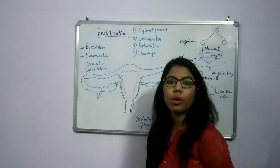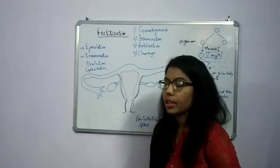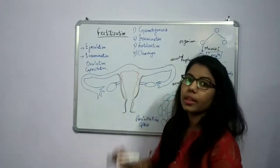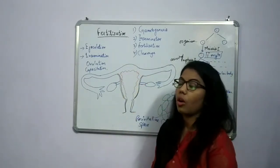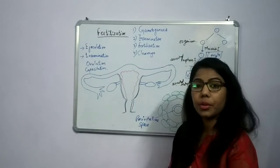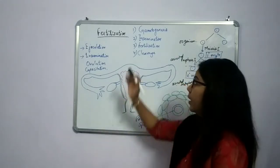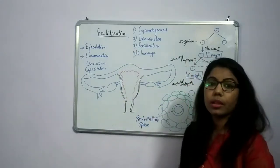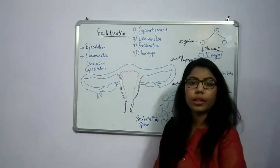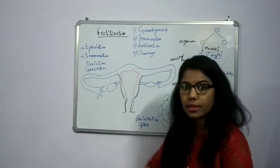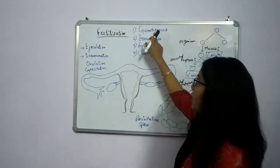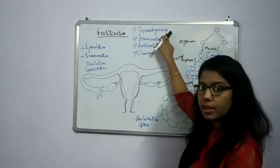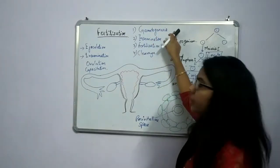Hello students, welcome you all. Today in this session we are going to start a new topic — fertilization — from the chapter Human Reproduction. In earlier lectures we covered the male reproductive system, female reproductive system, and gametogenesis, including spermatogenesis and oogenesis.